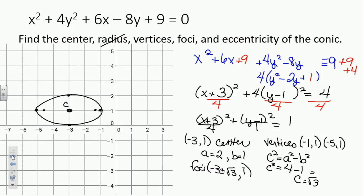Eccentricity — we have to remember — is equal to c over a. Our c in this case was the square root of 3, and a was 2. So the eccentricity is square root of 3 over 2.